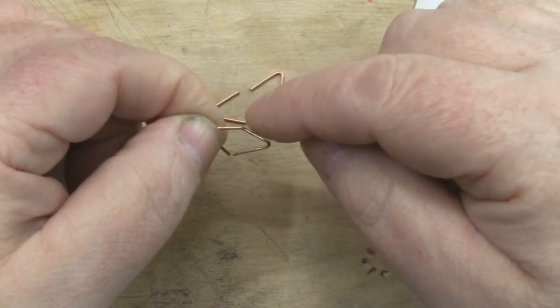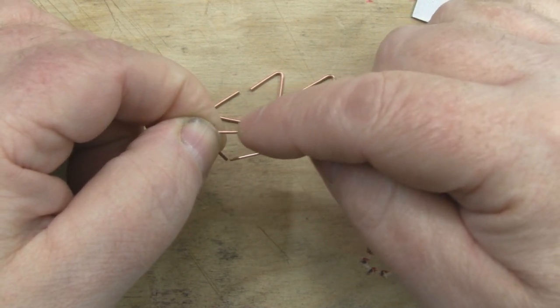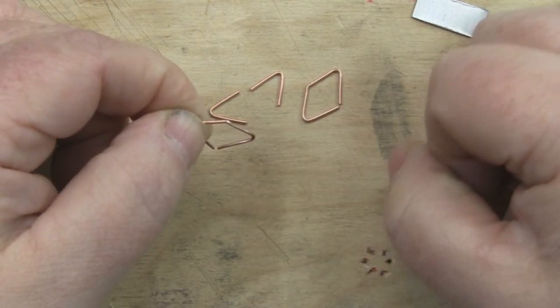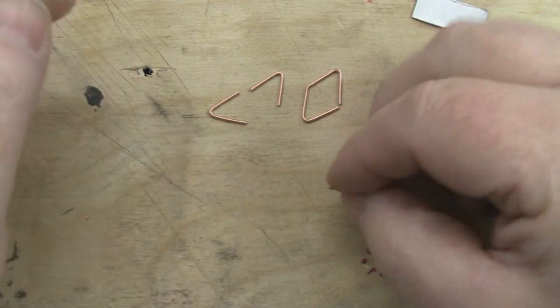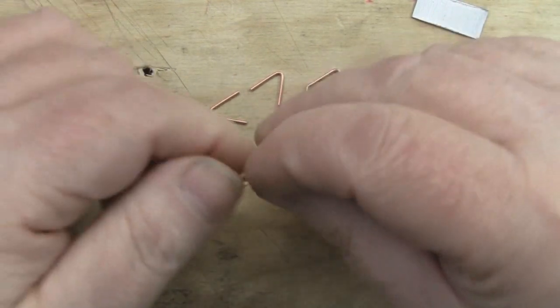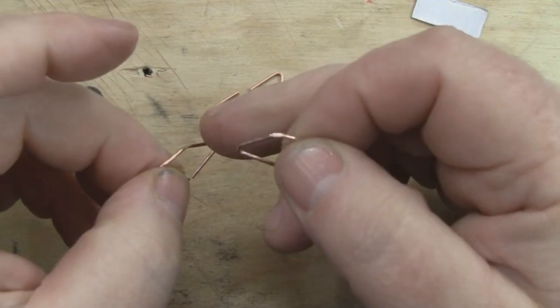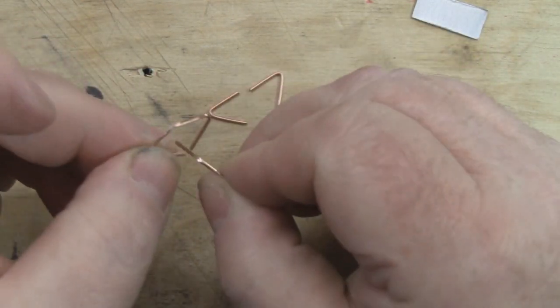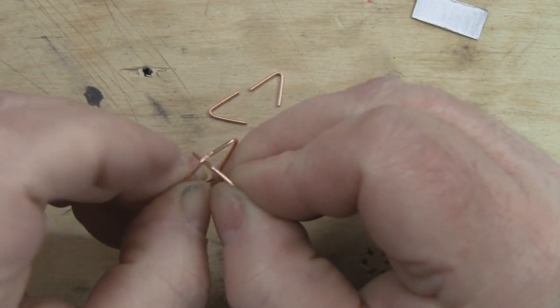One last thing I want to do is actually get my dremel tool and flatten the surface here of this top bend on both these two elements before I actually move on to soldering. I'm going to use my dremel tool but you could use a bit of emery paper on a flat surface and rub it a few times just to get that flat spot at the top.